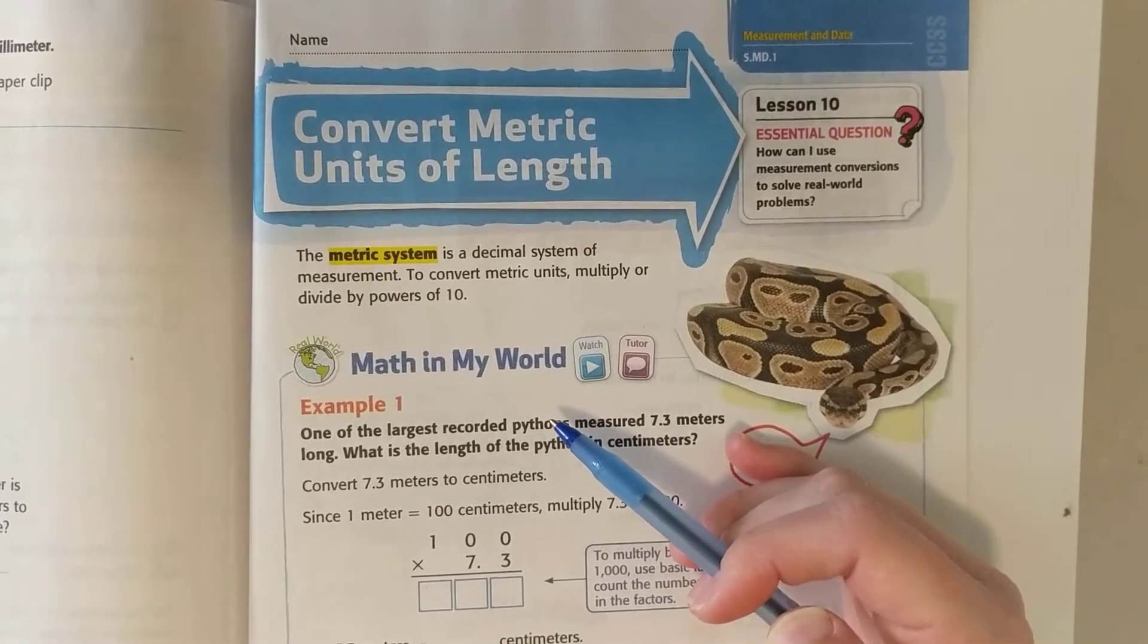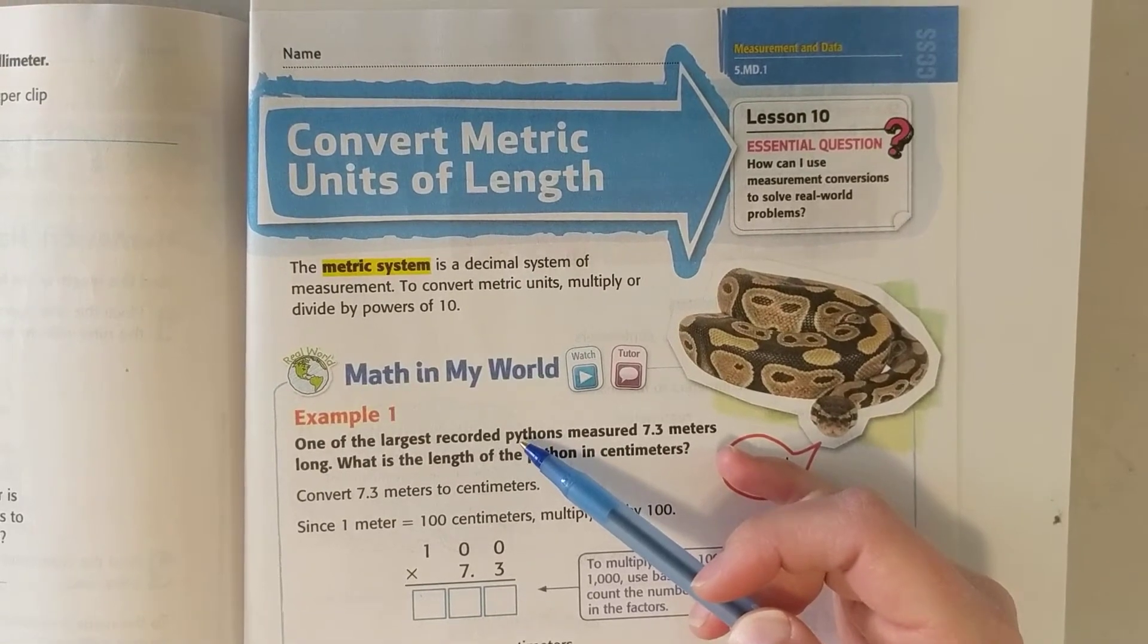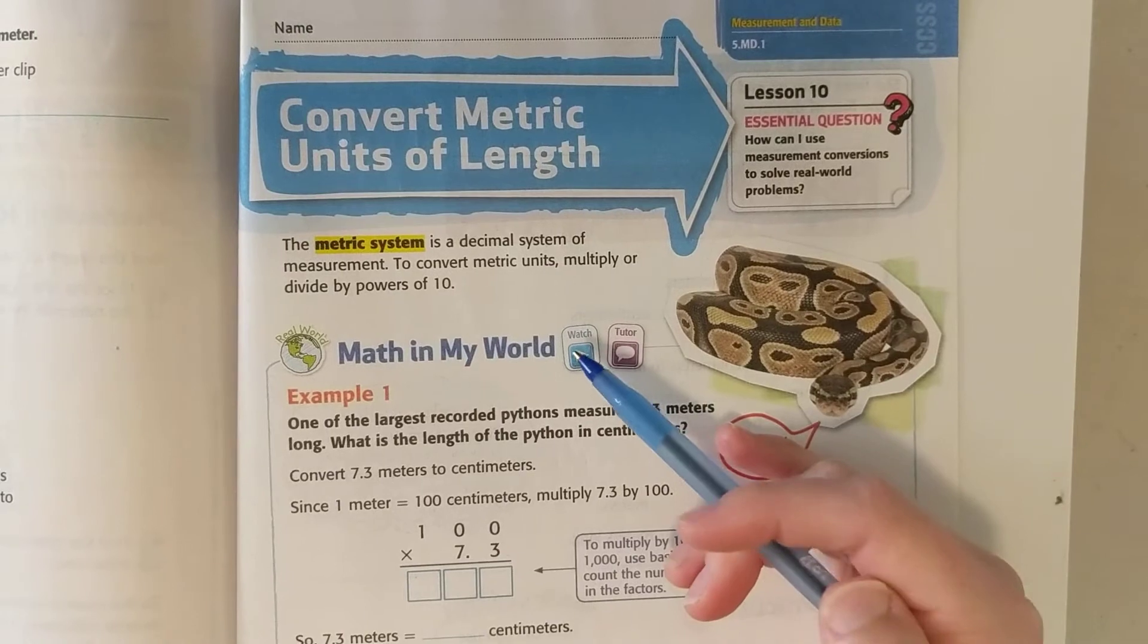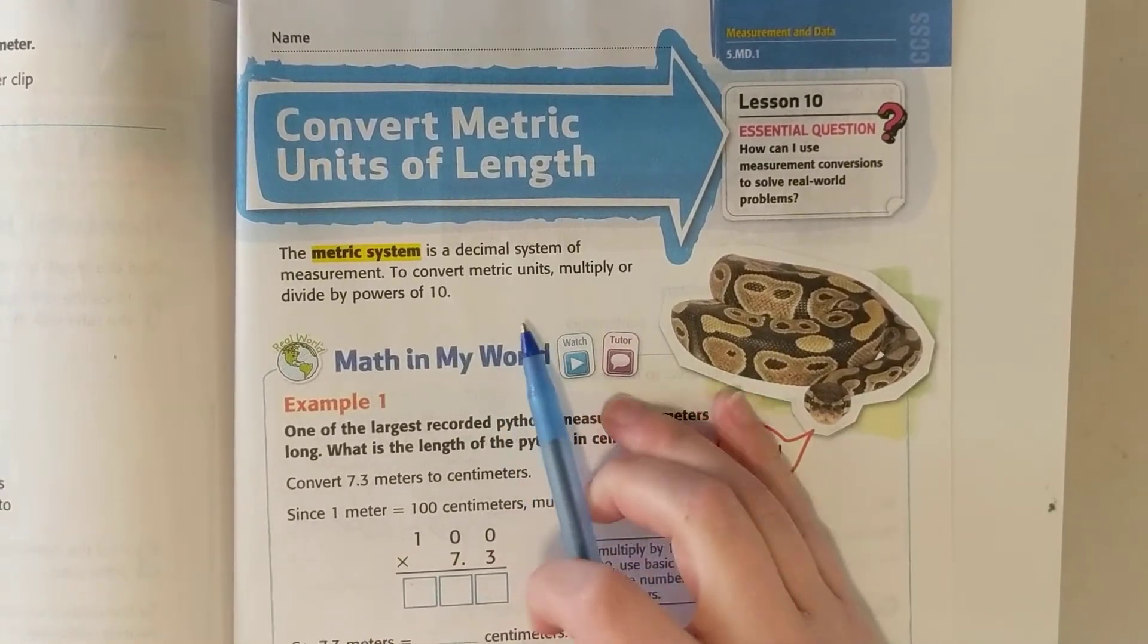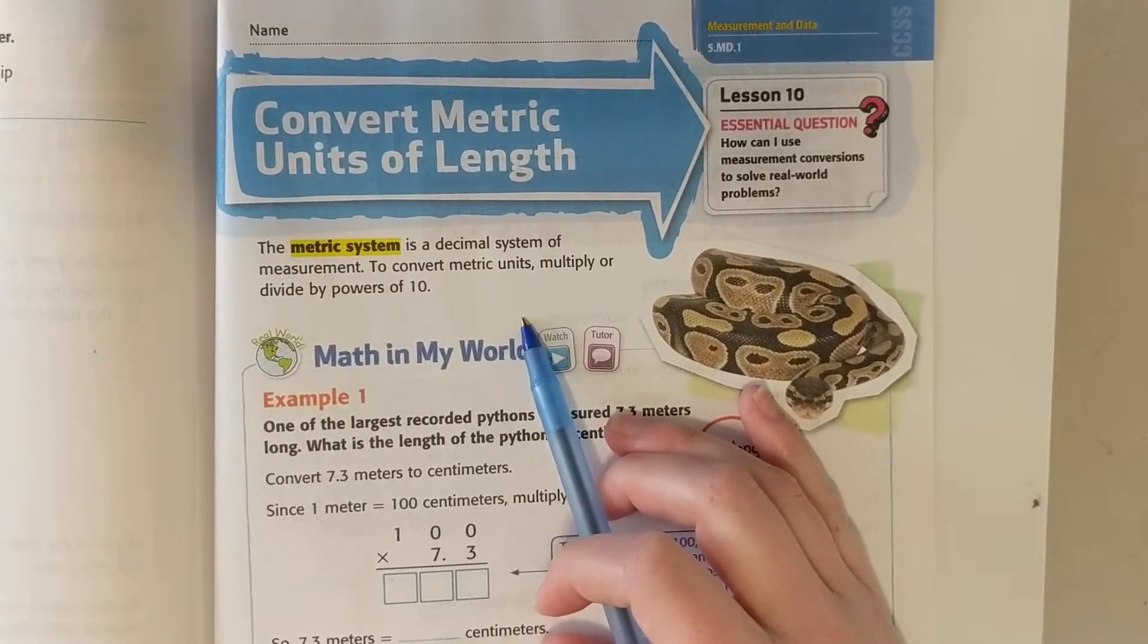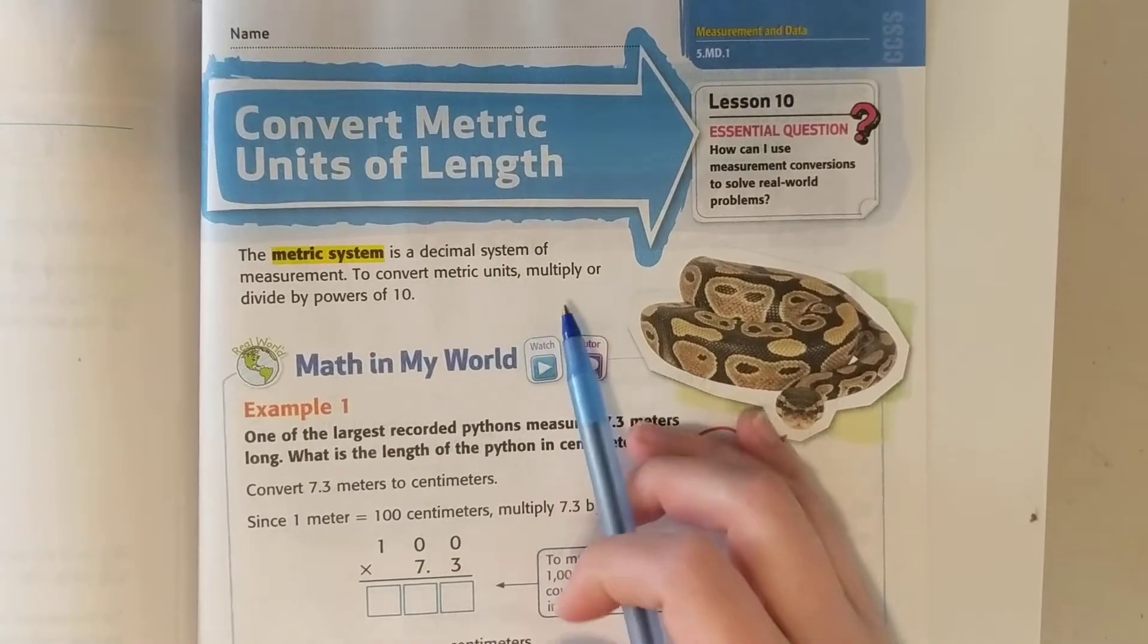Today we're working on converting in the metric system. The metric system is a decimal based system, so honestly converting in the metric system is a bit easier than converting in customary. To convert in metric units you multiply or divide by powers of ten, so you're always either multiplying or dividing by ten, one hundred, one thousand and so on.